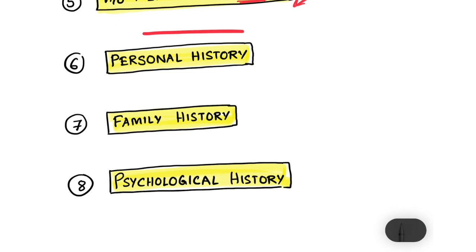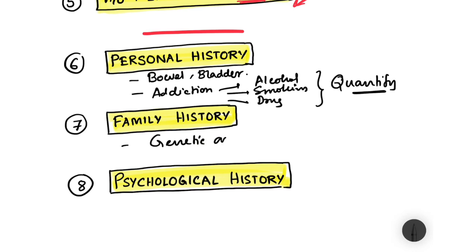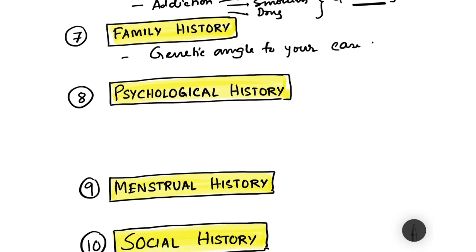Then comes personal history — the patient's bowel and bladder habits, personal hygiene, and any addictions to alcohol, smoking, nicotine, or recreational drugs. Always quantify addictions: how many pegs or milliliters of alcohol per day, how many cigarettes per day or in pack-years. Your professors will teach you how to quantify these in detail. Next is family history, which gives a glimpse into the genetic predisposition or familial pattern of a disease — for example, ask a breast cancer patient whether their mother or sister has the same disease.